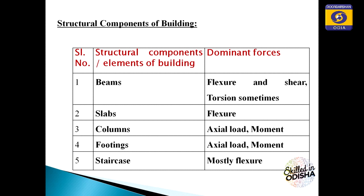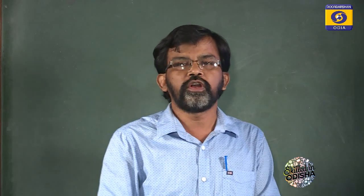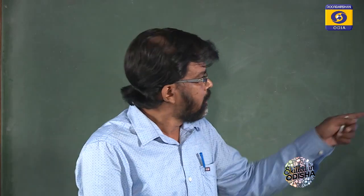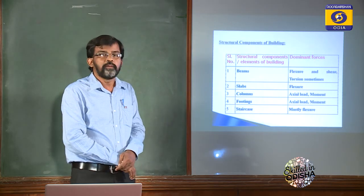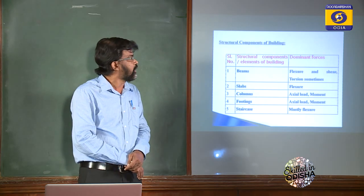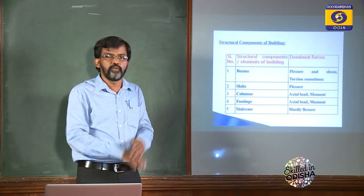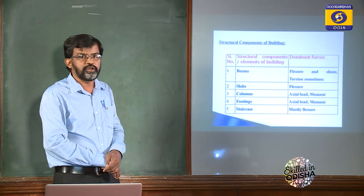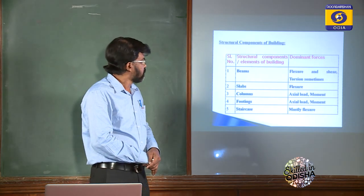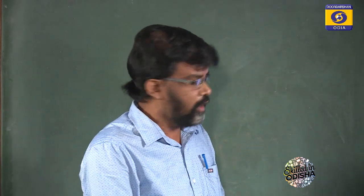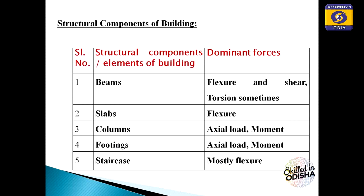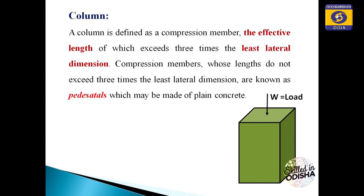A beam is a flexural member subjected to bending — we have already studied beam design. A slab is also a flexural member. A beam is associated with shear and sometimes torsion, but it is mostly designed for flexure and checked for shear. Slabs are mostly designed for flexure. Columns are axially loaded members, although sometimes there may be some moment in the column.